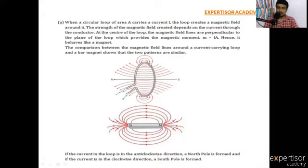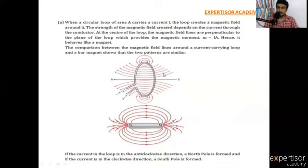Here you can see the north and south pole indications. The field lines are in circular form, and the loop creates field lines which are similar to the field lines created by a magnet.